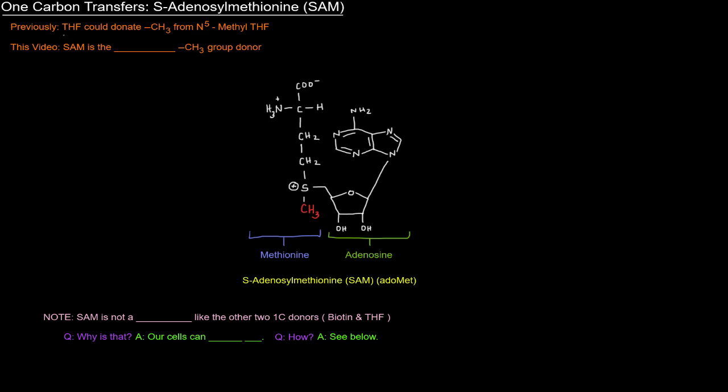Previously, we mentioned that THF could donate a methyl group from N5-methyl-THF, but that it wasn't a particularly good methyl group donor. In this video, we're going to talk about how S-adenosylmethionine, or SAM, is basically the primary methyl group donor. It's the preferred methyl group donor, and it's the one that pretty much does all the methyl group donation.